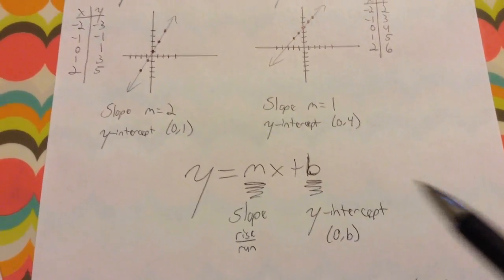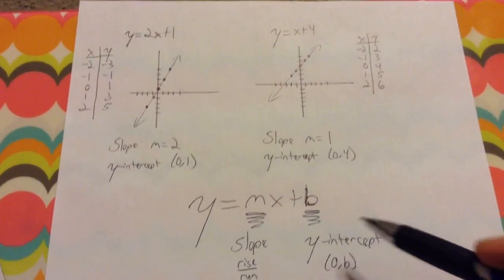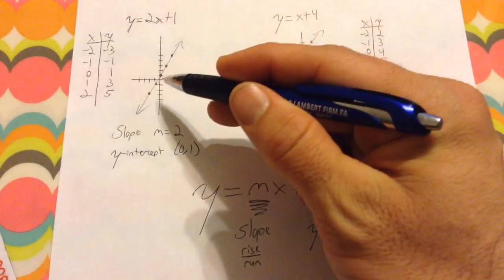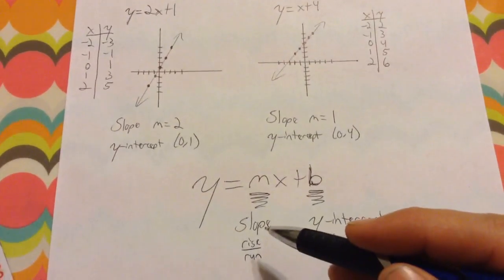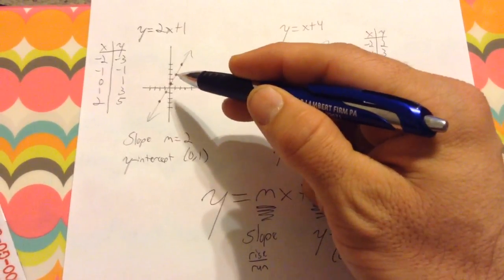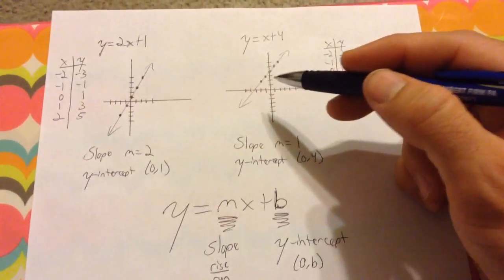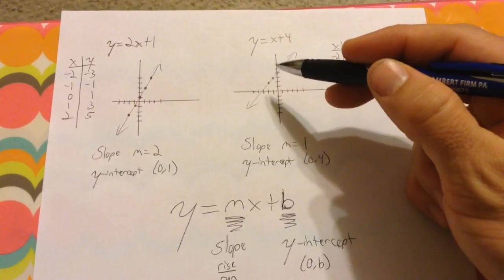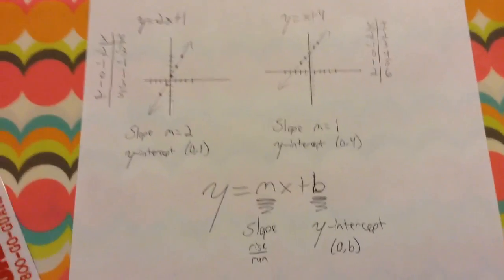This gives me the ability to graph a linear equation extremely quickly. All I have to do is find this point first and plot my y-intercept on the graph. Then use my slope — my rise over run — to find the next point: up 2 over 1. Then I've got two points to connect to make a line. Start my line at 4, up 1 over 1 for my slope, connect my dots, and I've got my line. It is the quickest way to graph.